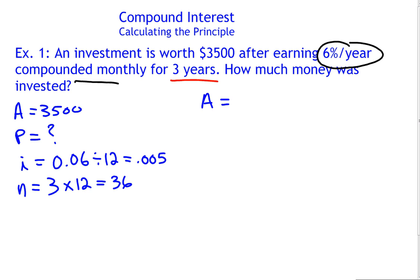Compound interest formula looks like this. A is equal to P times 1 plus i to the n. Plug in the values that we have. We know that the amount is $3,500. The principle we don't know. The interest is decimal 0.05. And n is 36.